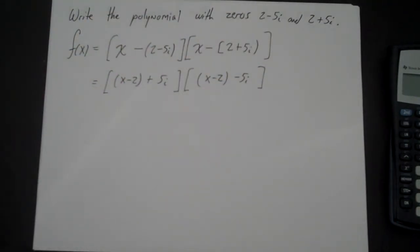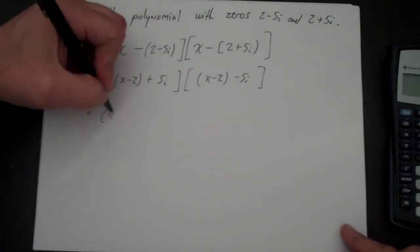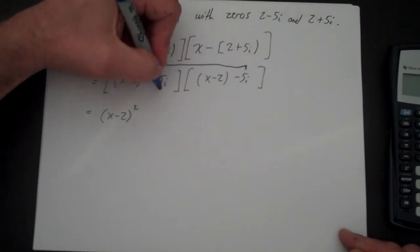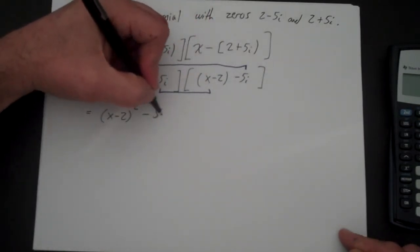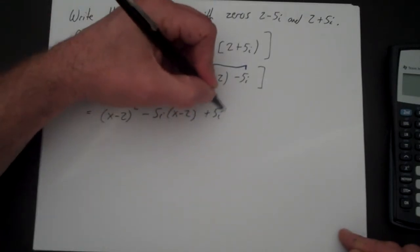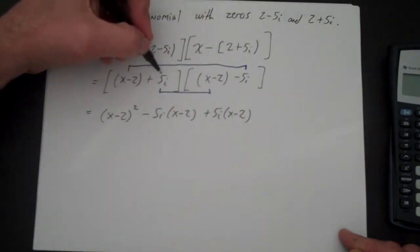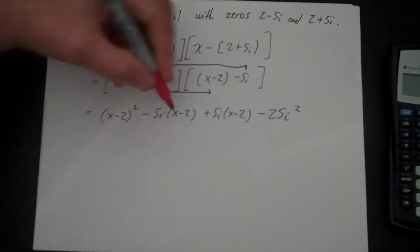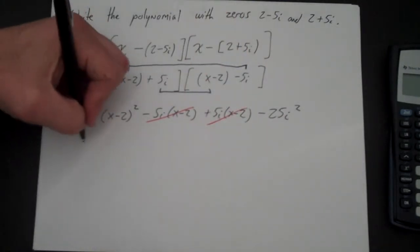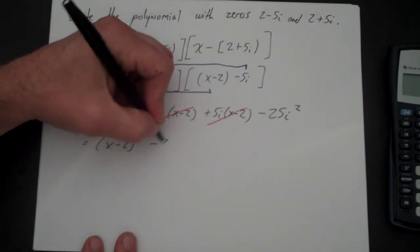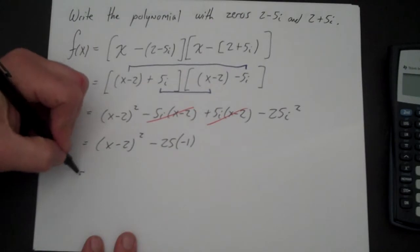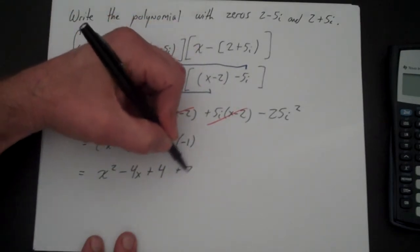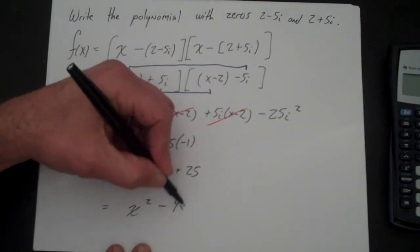Now let's FOIL. That's (x minus 2) times (x minus 2), which is (x minus 2) squared. The cross terms — minus 5i times (x minus 2) and plus 5i times (x minus 2) — cancel. Then 5i times minus 5i is minus 25i squared. So we get (x minus 2) squared plus 25, which is x squared minus 4x plus 4 plus 25.